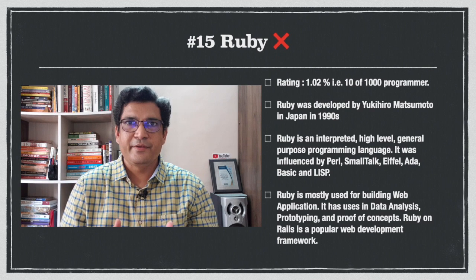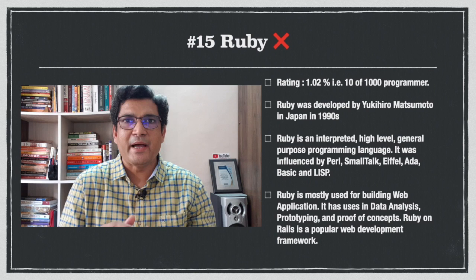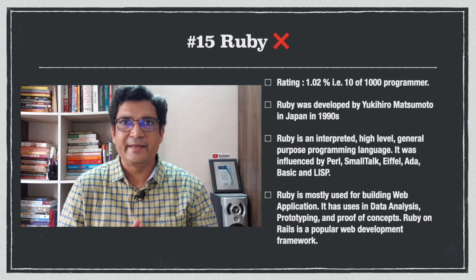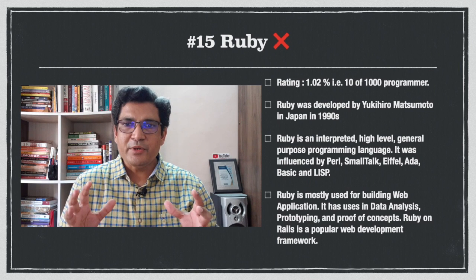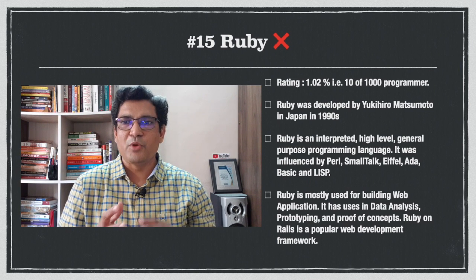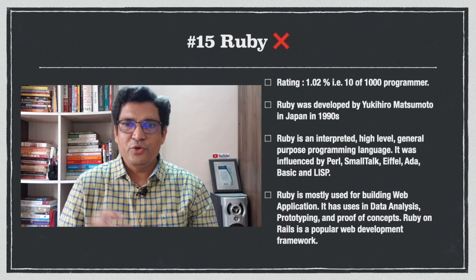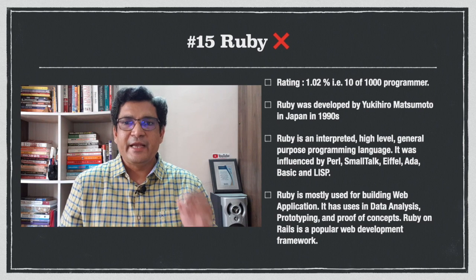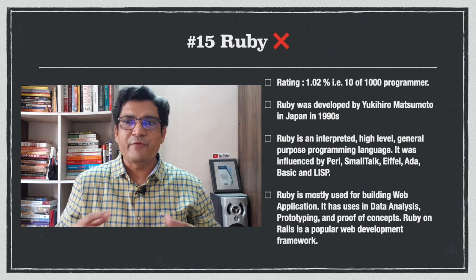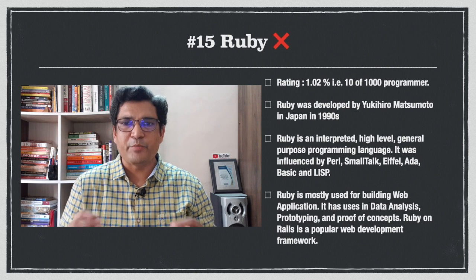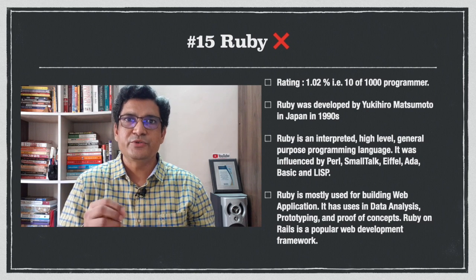At number 15 is Ruby, developed by Yukihiro Matsumoto in Japan in the 1990s. Ruby is an interpreted, high-level, general-purpose programming language influenced by Perl, Smalltalk, Eiffel, Ada, Basic, and Lisp. Ruby is mostly used for building web applications and has uses in data analysis, prototyping, and proof of concept. Ruby on Rails is a popular web development framework for building web applications.